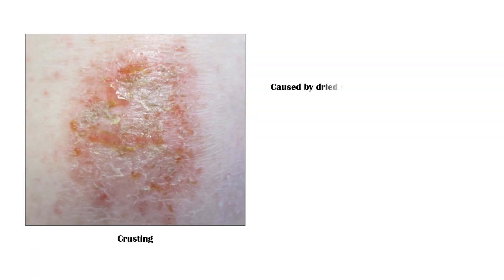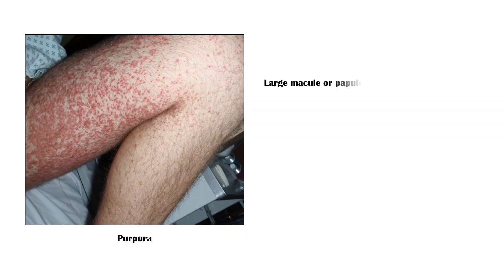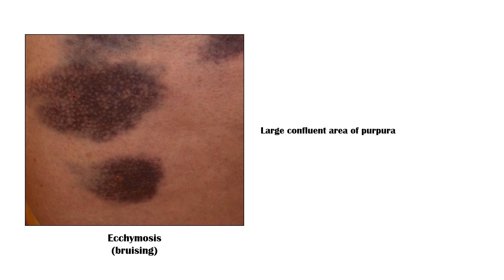Crusting is caused by dried serum or exudate, typically after rupture of vesicles or bulla. Petechiae are pinhead-sized, non-blanching areas of hemorrhage. Purpura is a large macule or papule of blood in the skin, which does not blanch on pressure. Ecchymosis is a large confluent area of purpura.